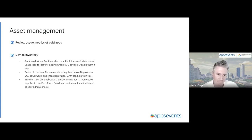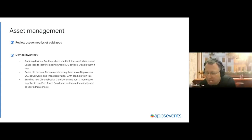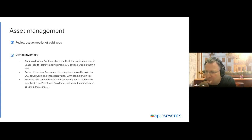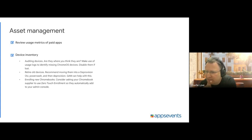For device inventory, it's important to use the Admin Console to look at devices coming to end of life. You can check Chrome device reports in the Admin Console to understand the state of your devices and plan transitions accordingly — so you know when devices need to be replaced.